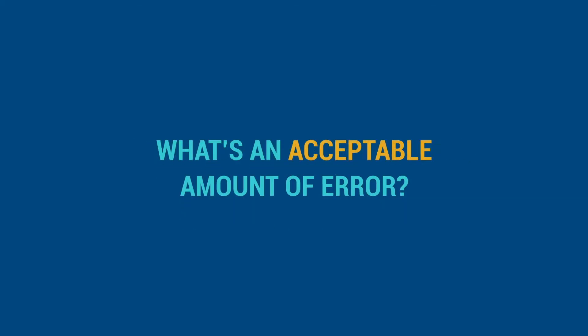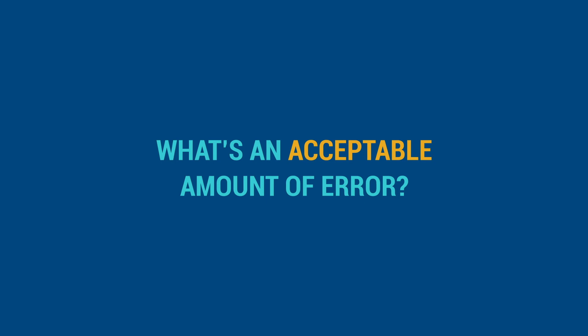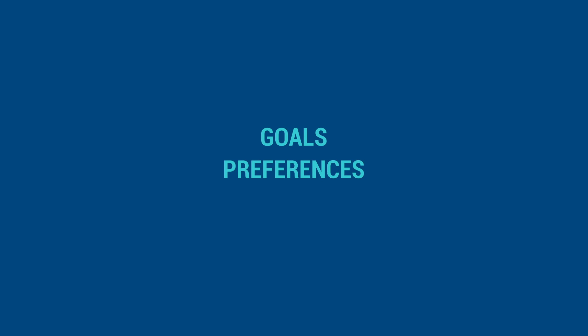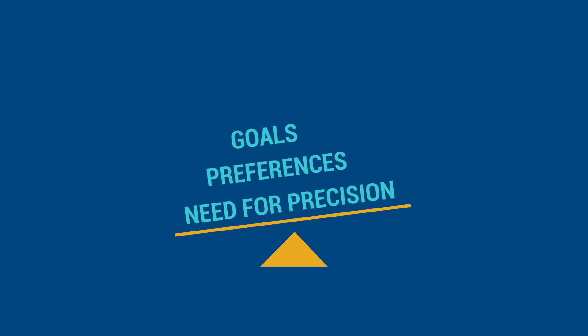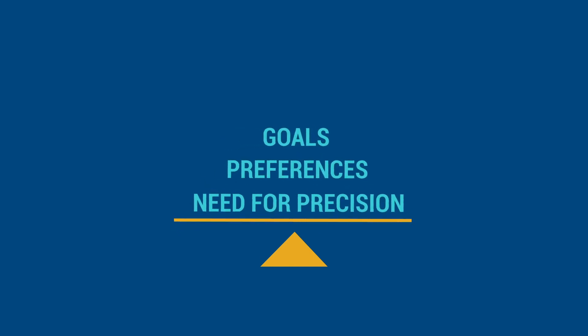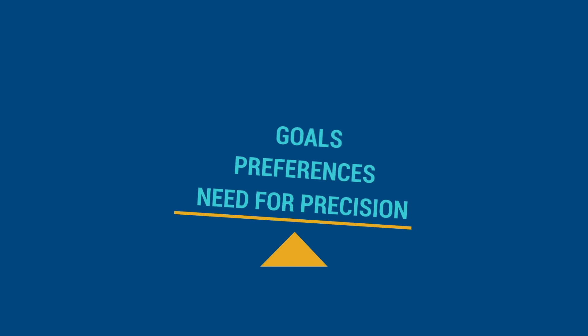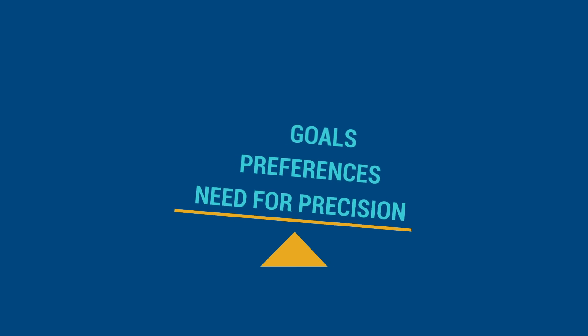What's an acceptable amount of error? Unfortunately, there are no hard and fast rules. The tolerable range for sampling error depends on your goals, preferences, and need for precision. You don't want to provide estimates that are so unreliable or imprecise that they're not useful or could be misleading, but you need to weigh those concerns against the importance of presenting the data that are available.